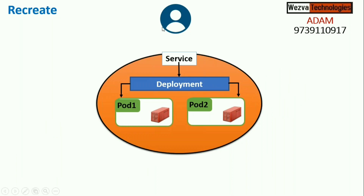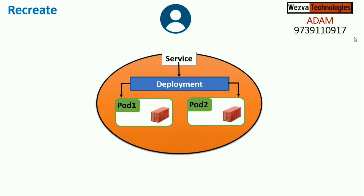For this example, we have a web application which is Java-based and stateless. For a stateless application, you run it as a deployment object in Kubernetes. Let's assume we have a NodePort service to access it and two replicas, because you always need a minimum of two replicas for resilience, so that if one pod goes down you have the other pod serving.